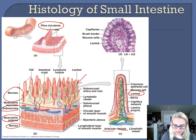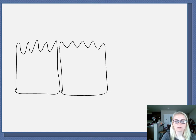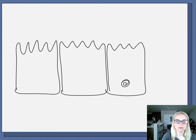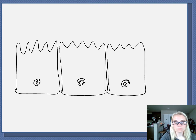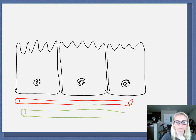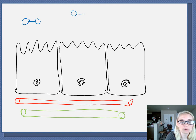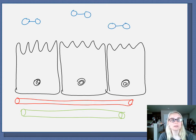Now let's look at brush border enzymes — I'll draw this out on a whiteboard. We have absorptive cells with their little microvilli, with a nucleus inside. Underneath, within the areolar connective tissue of the lamina propria, you have your blood supply — a capillary — and your lymph vessel. In the lumen, coming down from the stomach and duodenum, you might have dipeptides — proteins that have been broken down into two amino acid partners.